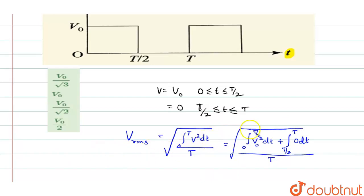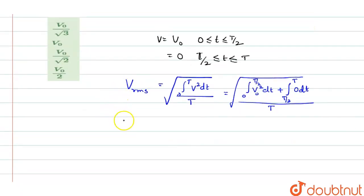The 0·dt term goes away since it equals zero. So V_RMS = √(∫₀^(T/2) V²dt / T). That's all you have to solve.